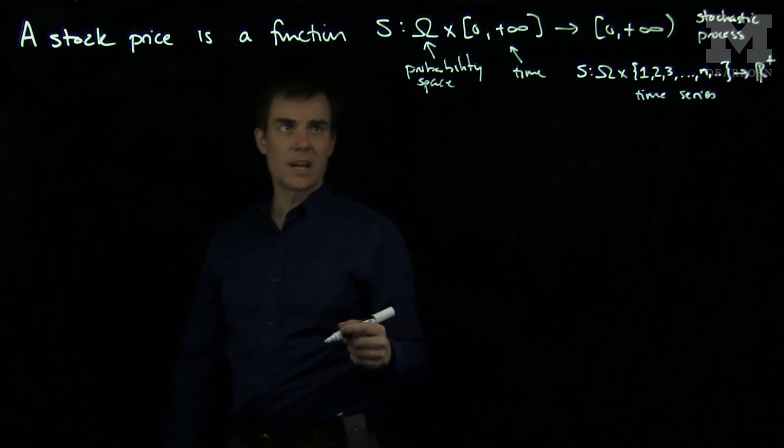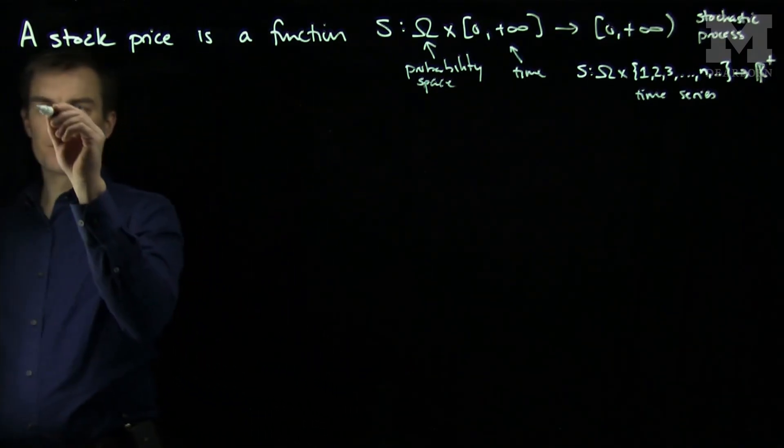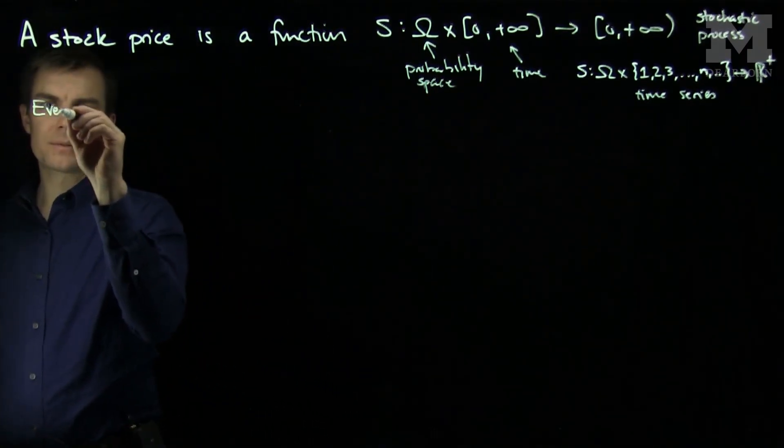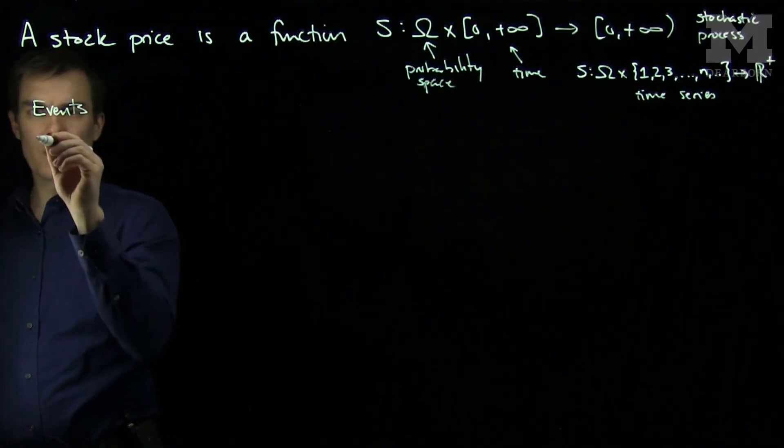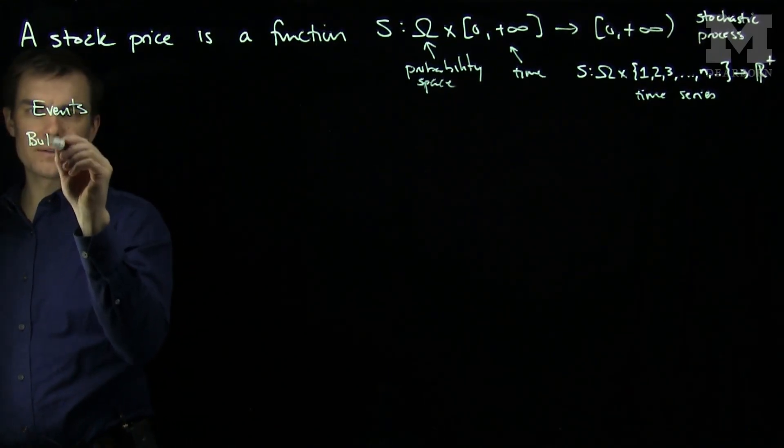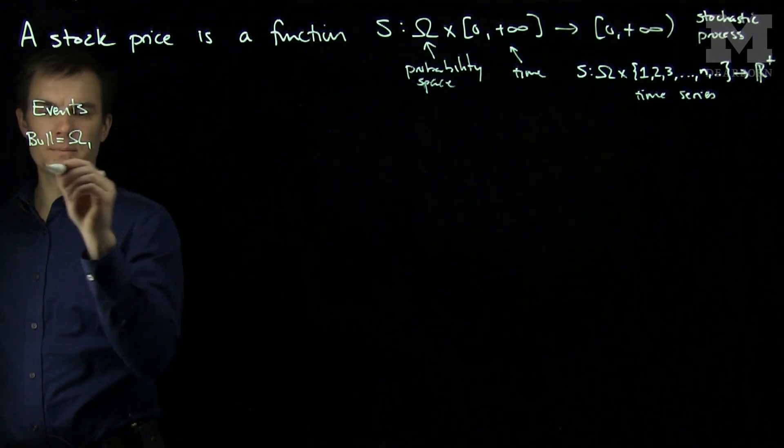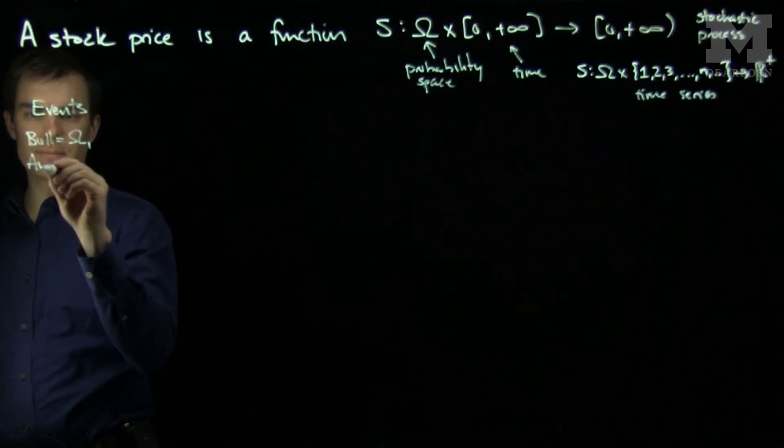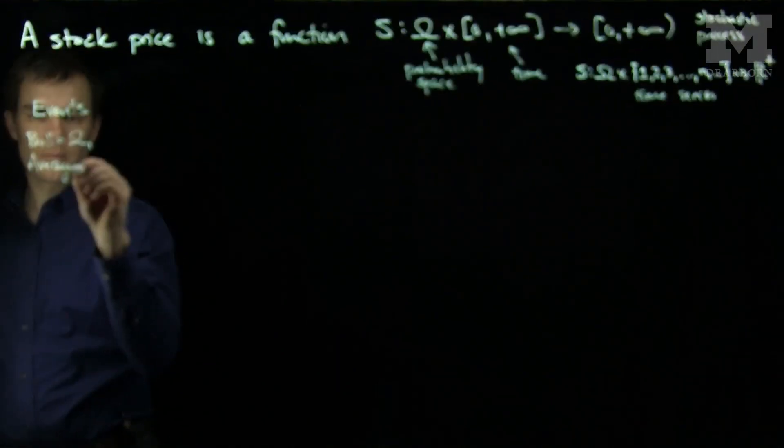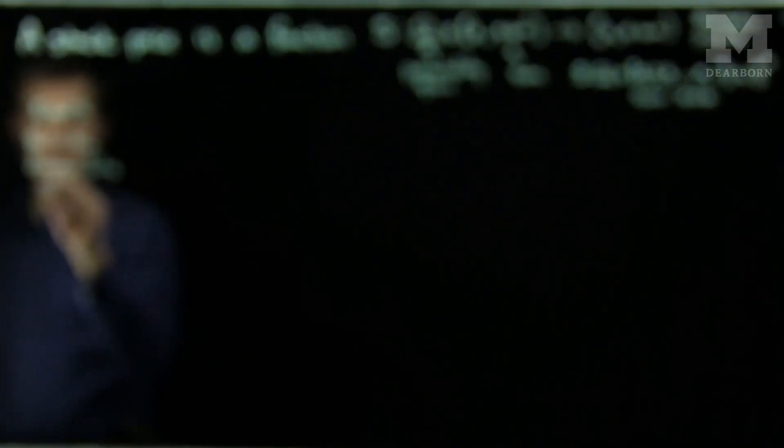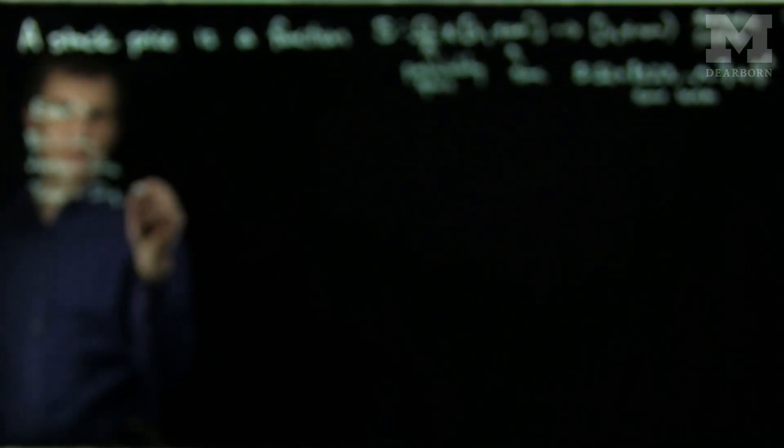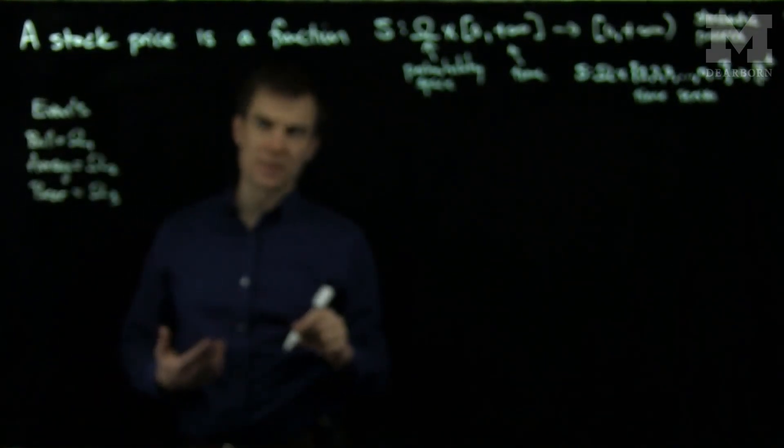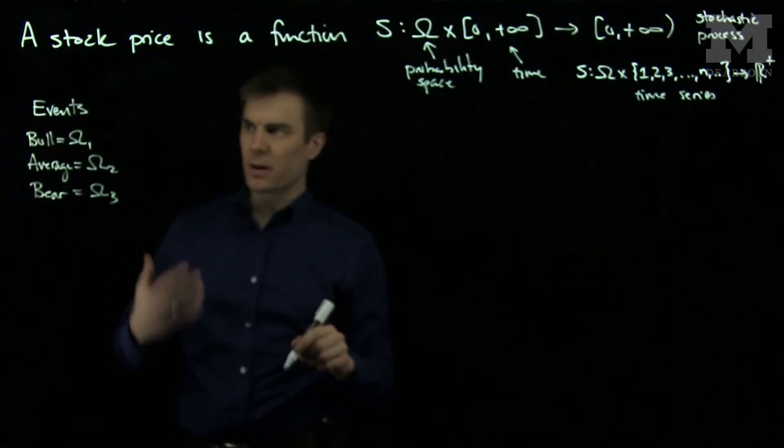So let's consider an example of this. Let's consider the events in my probability space. I will have a bull event, which I'll write as Omega 1. I will have an average event, which I'll write as Omega 2. And I'll have a bear event, which I'll write as Omega 3. So in this instance I'm going to have three market scenarios: a bull market, an average market, or a bear market.